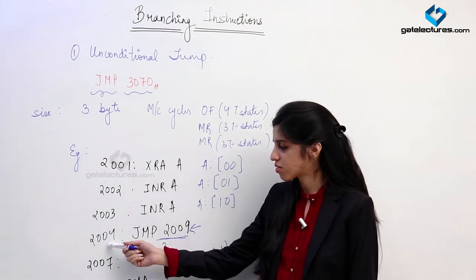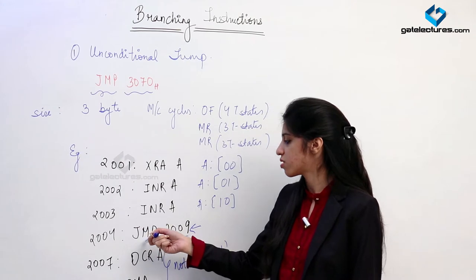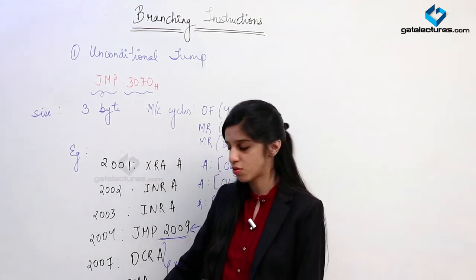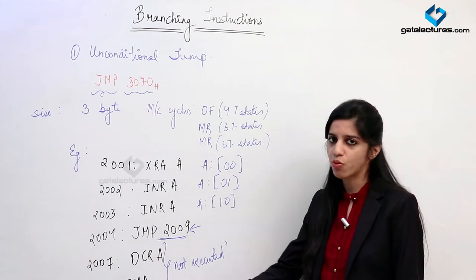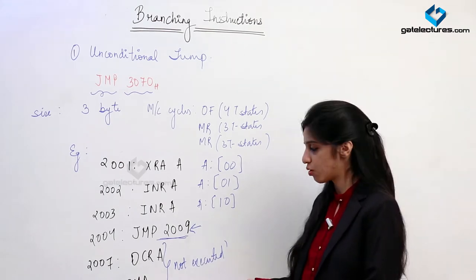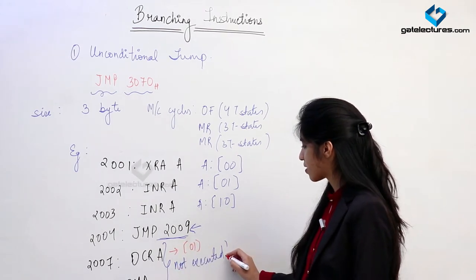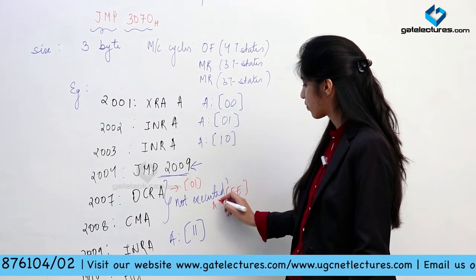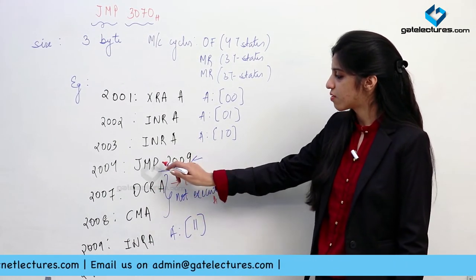What had to happen after execution of instruction at 2004 was to go to the next memory location 2007. But because JMP 2009 came, the PC value gets overwritten with 2009 and directly jumps to memory location 2009 which has INR A. So A gets incremented and becomes 03. These two instructions — DCR A and CMA — are not executed. If CMA had been executed, the accumulator would have become FE, but this did not happen because of the unconditional jump.